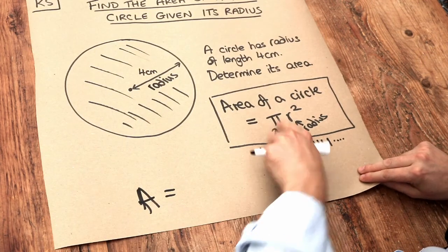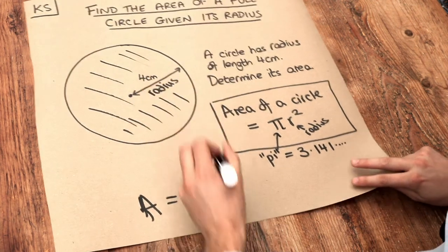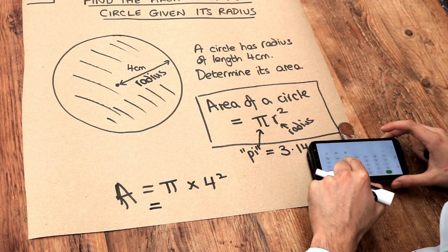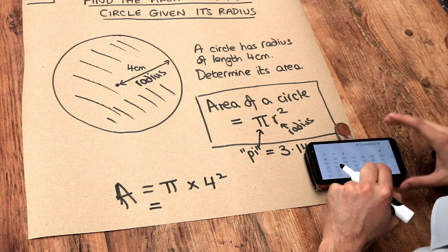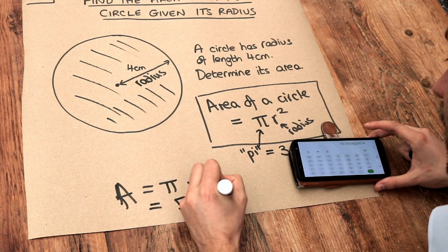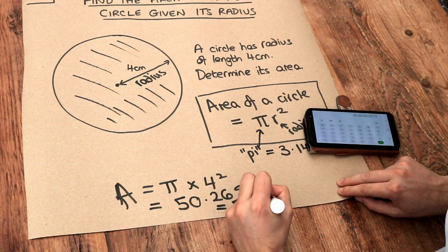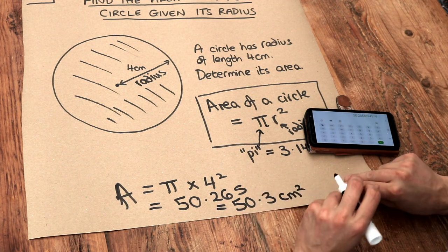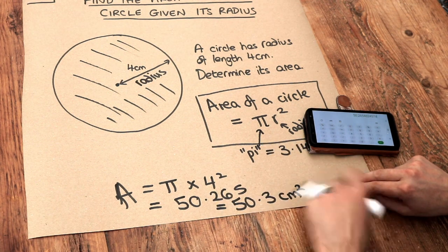So in this particular case, the area of the circle is going to be pi multiplied by the radius of 4 squared. Now if I do that on my phone calculator because I'm missing my calculator, so pi times 4 times 4, and that will give me 50.265, and if we wanted that to 3 significant figures that's just going to be 50.3 centimeters squared.